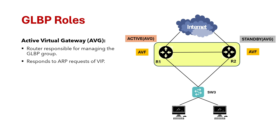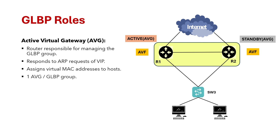When a PC wants to communicate with any entity outside the network, it will send an ARP request. The AVG is responsible for responding to that ARP request and assigning a virtual MAC address for the PC to communicate with. Only one AVG will exist per GLBP group.